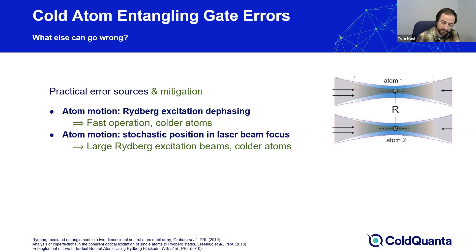A second contribution from that same positional variation comes from the variation of position within the tightly focused individual addressing excitation beams. Both of these effects can be mitigated by going to colder atoms — motivating some in the field to look at sideband cooling to near full ground state occupation of the traps, or going to more exotic atomic species like strontium, where narrow-band cooling approaches a large fraction of ground state population.